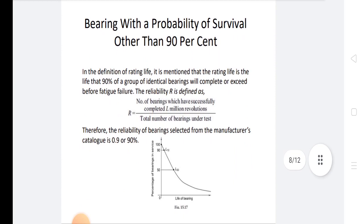Now we discuss bearing with probability of survival other than 90%. In the definition of rating life, it is mentioned that the rating life is the life that 90% of a group of identical bearings will complete or exceed before fatigue failure. However, the reliability R is defined as